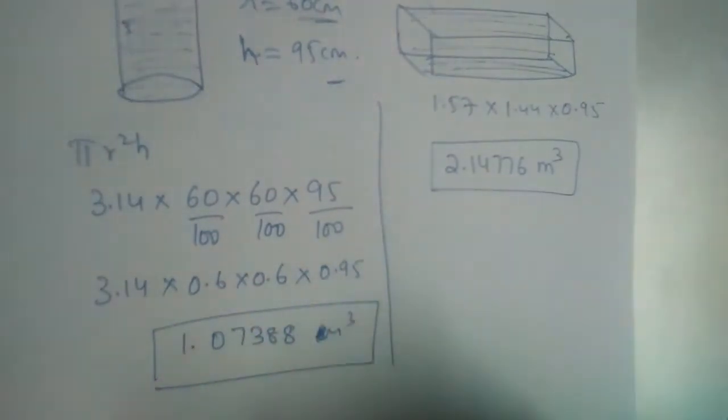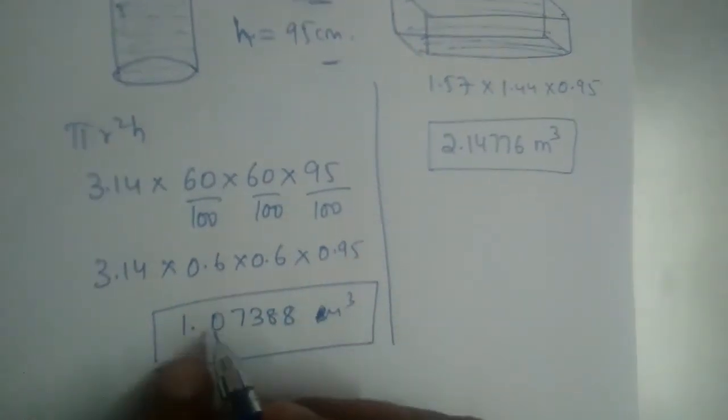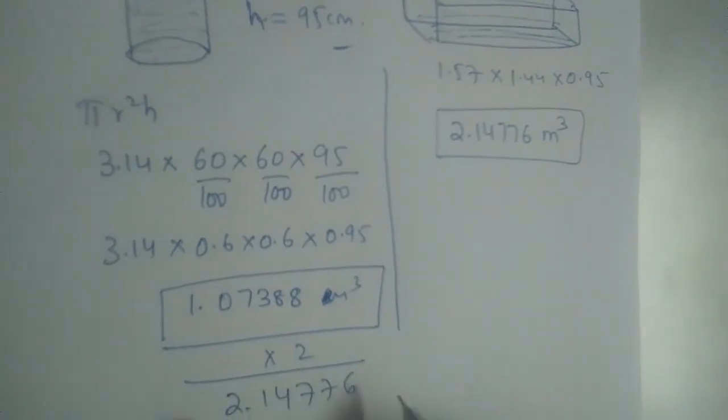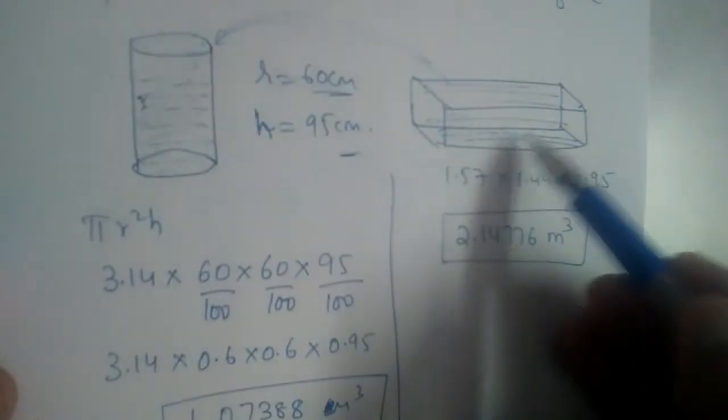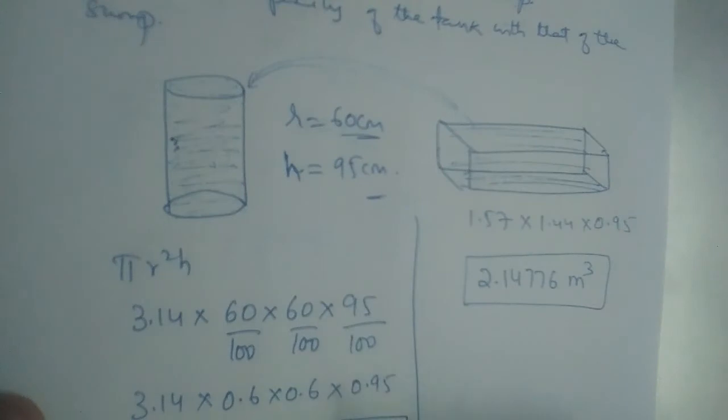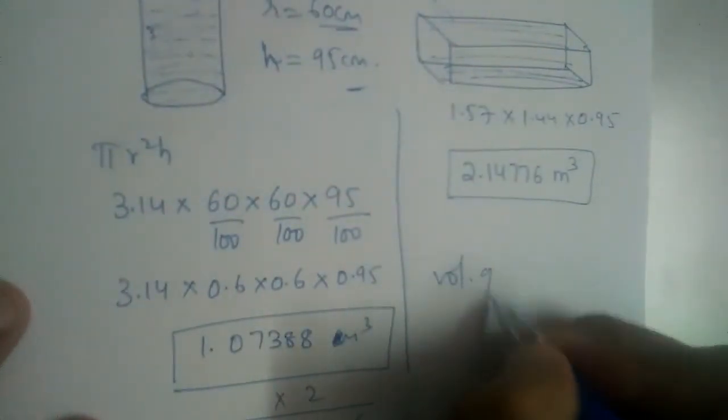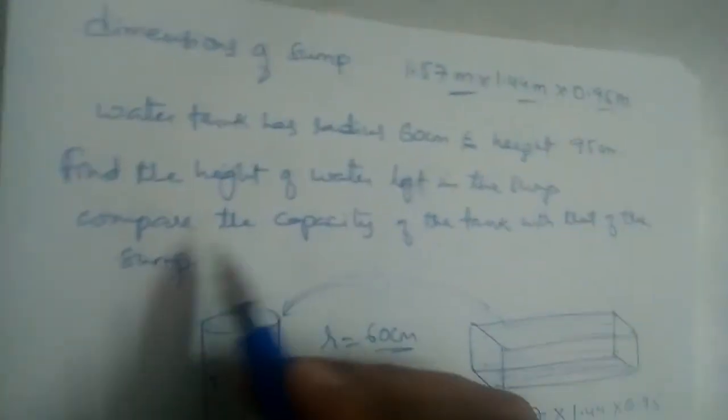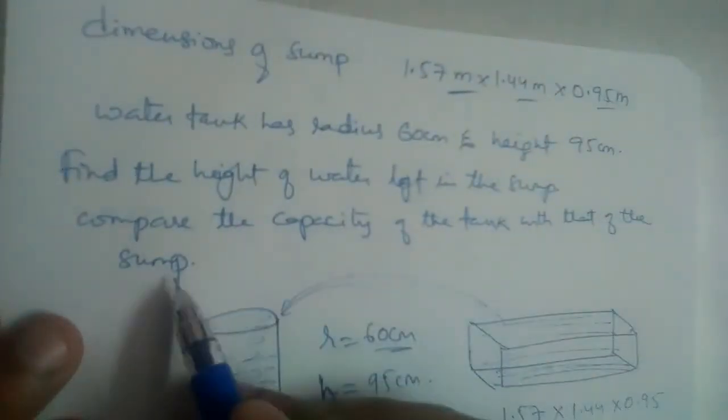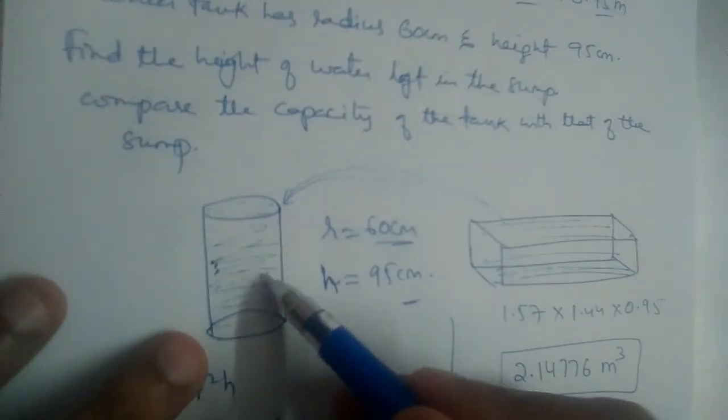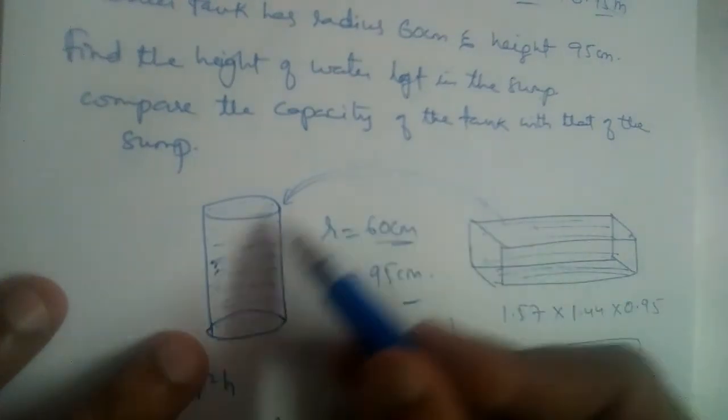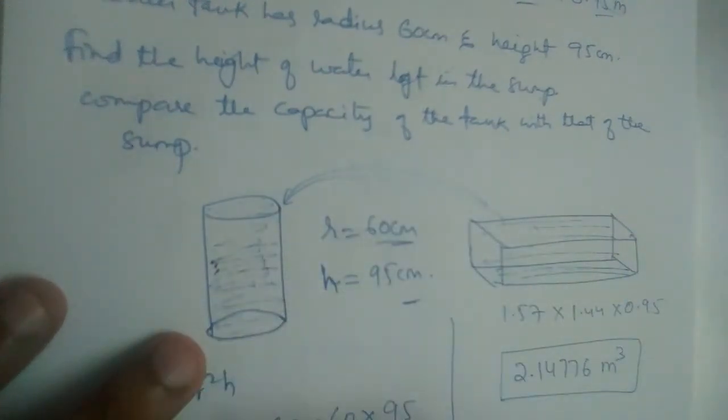Now, if you compare these two, if you observe carefully, if you multiply this number by 2, we will have 2.14776. Which means, the volume of this sump is twice the volume of this cylinder. So, volume of the water sump is equal to 2 times volume of the water tank. We need to compare this. This one is half of this volume, or volume of this sump is twice the volume of this cylinder.